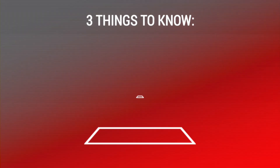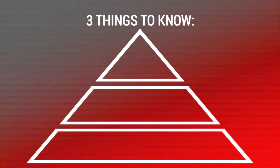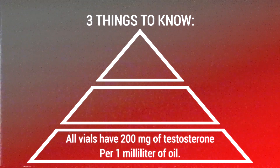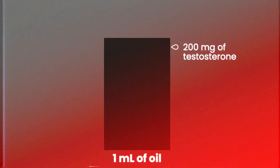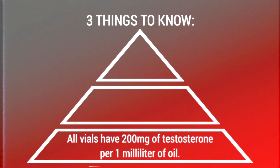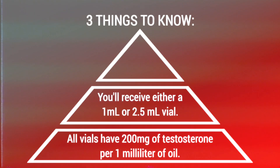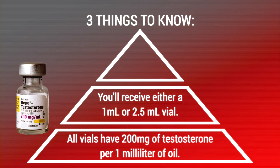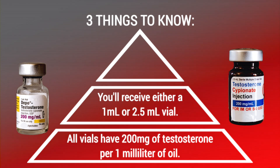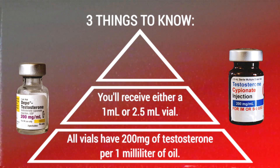There are three things that are important to understand when it comes to your dosage. The first is that all vials shipped from our pharmacies are marked 200 milligrams per milliliter. That means there are 200 milligrams of testosterone per one milliliter of liquid contained inside your vial. The second thing to know is that we currently ship two different sizes. Depending on the pharmacy that fills your prescription, you'll receive either a small one milliliter vial or a larger 2.5 milliliter vial. Both vials contain the same strength mixture.